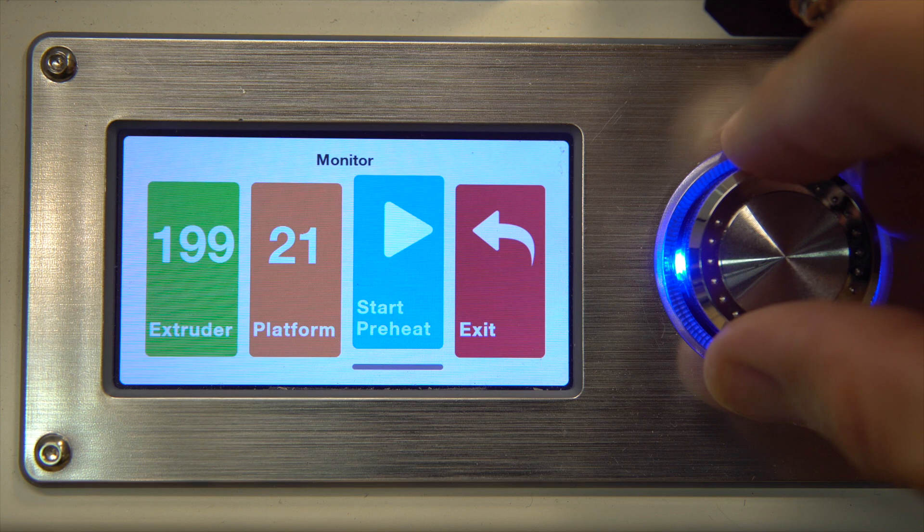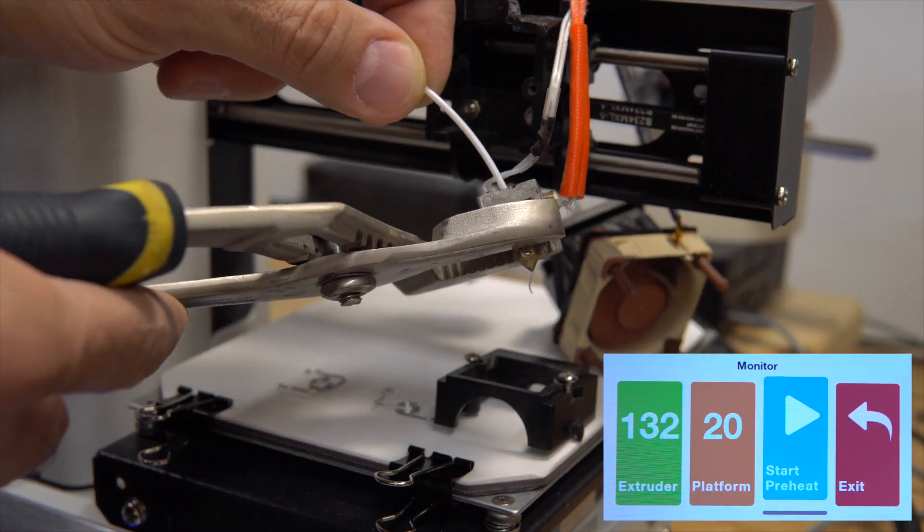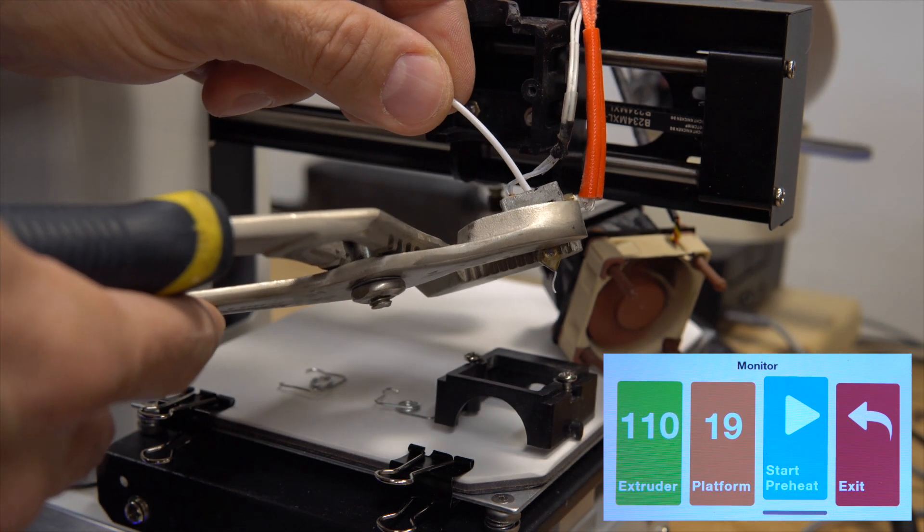Then you turn off the preheat and hold the filament in place until you reach around 90 degrees.